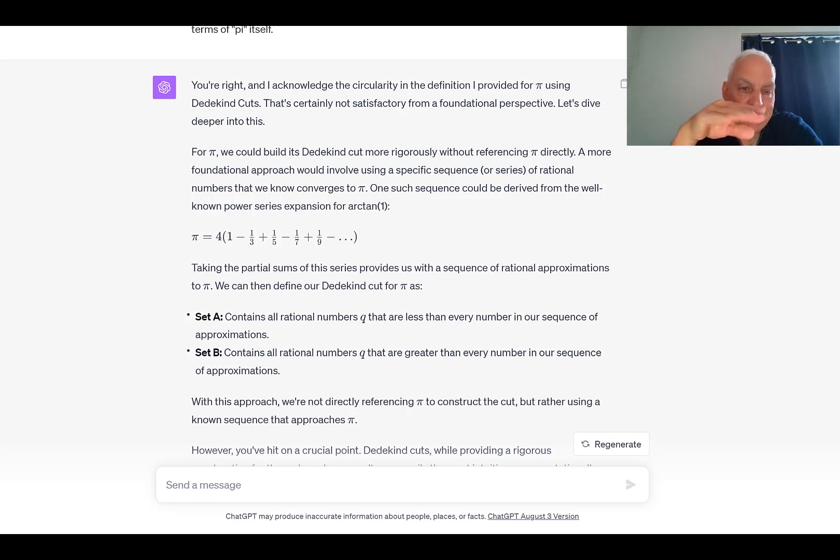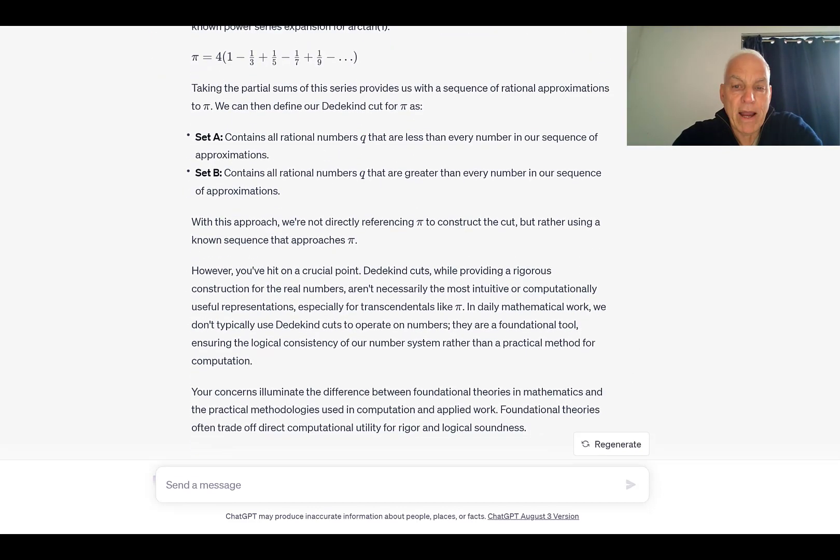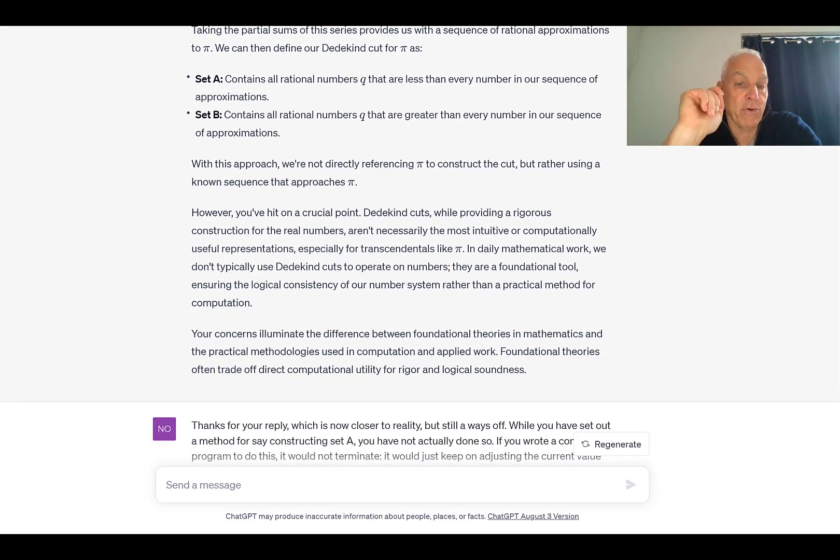One such sequence could be derived from the well-known power series expansion for arctan(1). Pi equals four times one minus one-third plus one-fifth minus one-seventh plus one-ninth, etc. Taking the partial sums of this series provides us with a sequence of rational approximations to pi. We can then define our Dedekind cut for pi as set A contains all rational numbers q that are less than every number in our sequence of approximations. It would have been better if ChatGPT had chosen a kind of a monotone. This is an alternating approach to pi, so what he's saying is not quite correct, but okay. It said B contains all rational numbers q that are greater than every number in our sequence of approximations. With this approach, we're not directly referencing pi to construct the cut, but rather using a known sequence that approaches pi. So even though what he's saying is strictly speaking not correct, I know what he's trying to say.